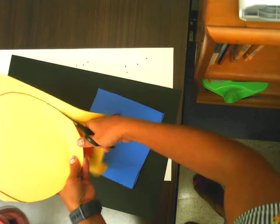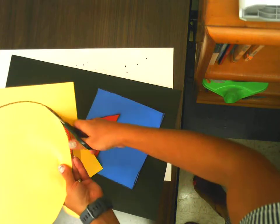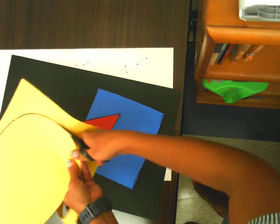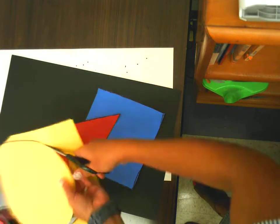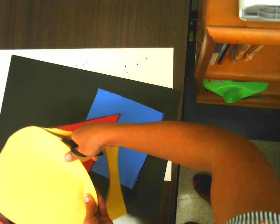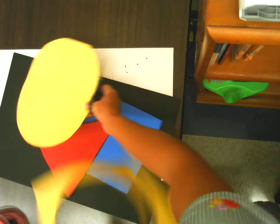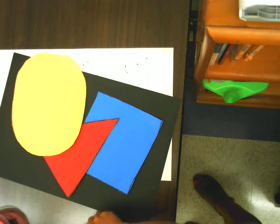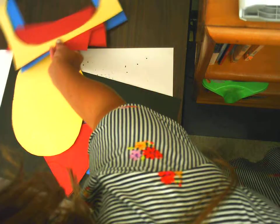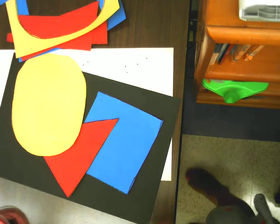And our last shape, our circle or oval. For now, just take your scraps and put them to the side. We will need them for later.